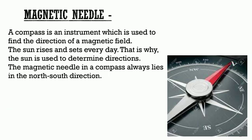Magnetic Needle is an instrument which is used to find the direction. In a magnetic needle, four directions are mentioned: East, West, North and South, and also degrees are mentioned. Pilots and ship captains use it to find out the direction. The magnetic needle in a compass always lies in the North-South direction.